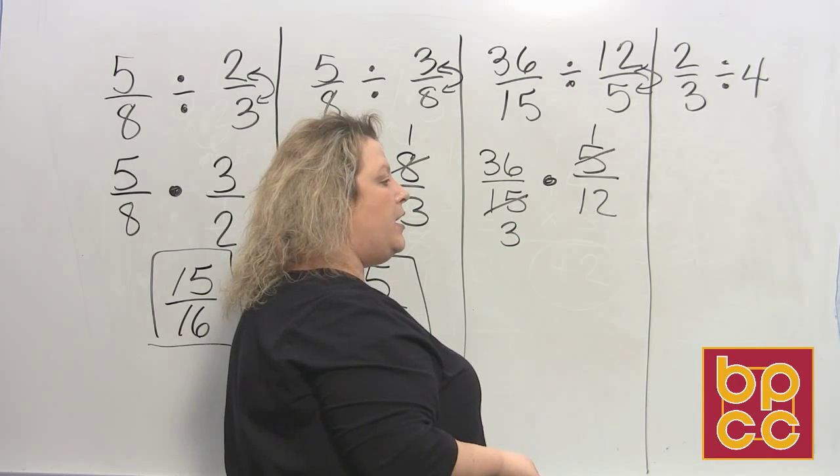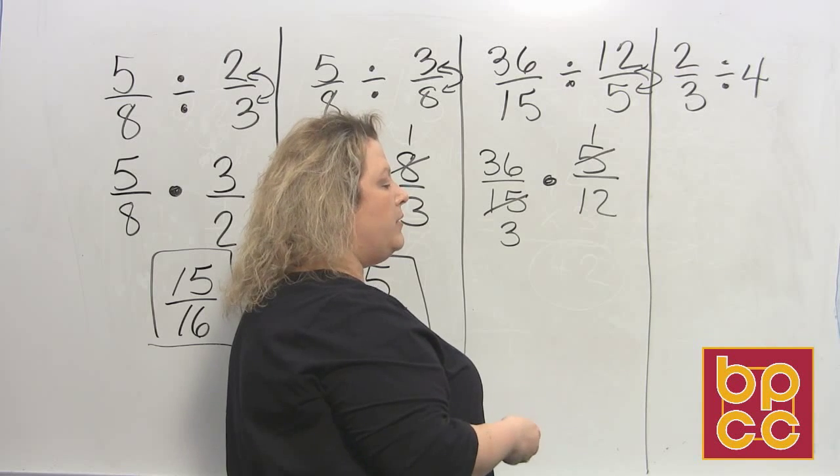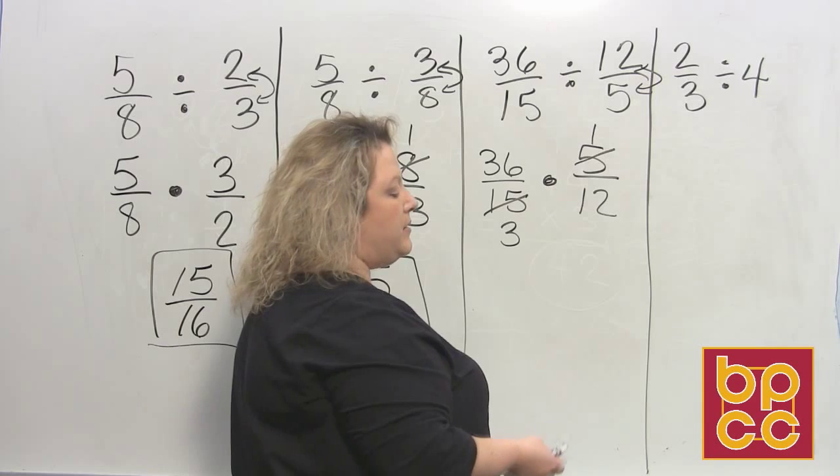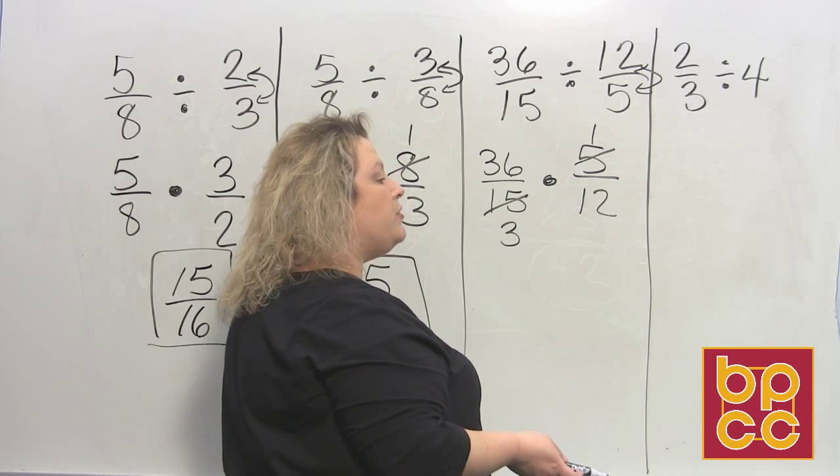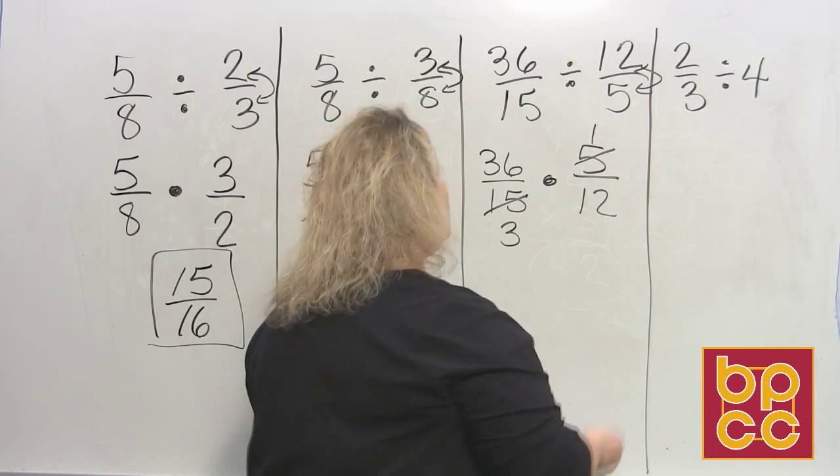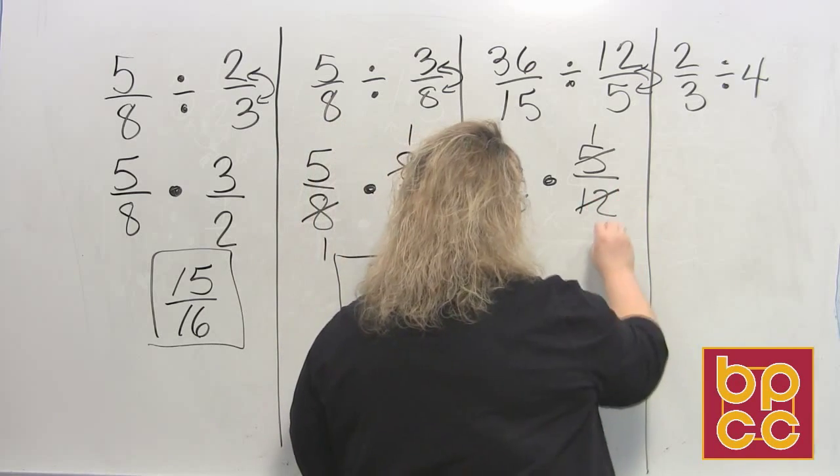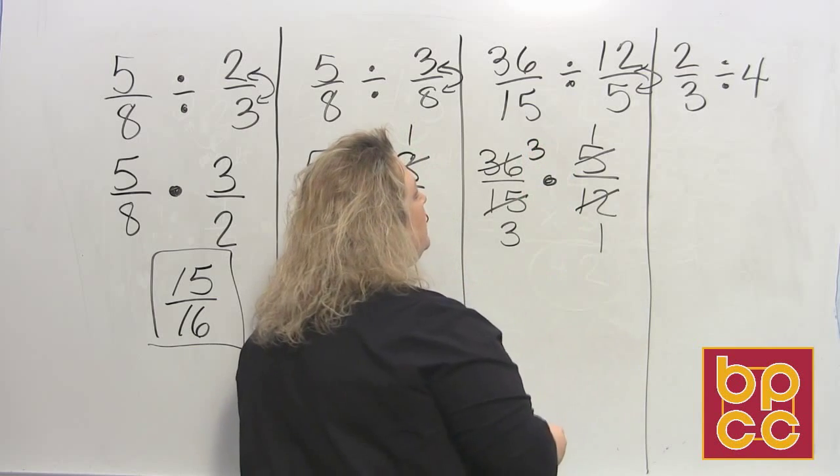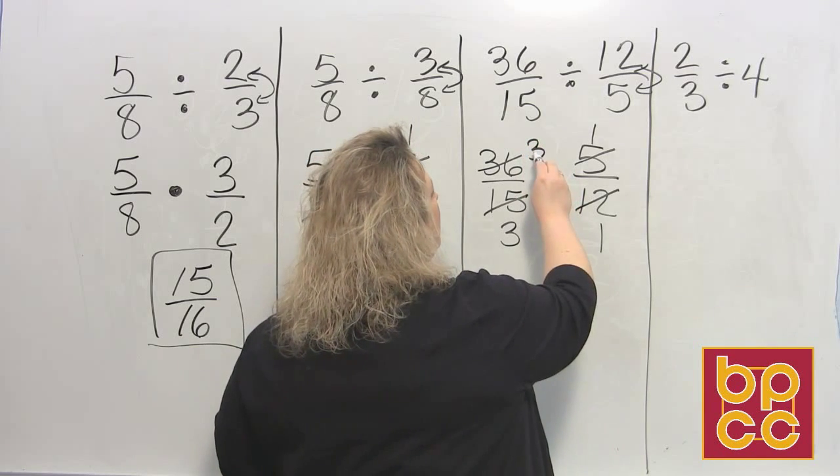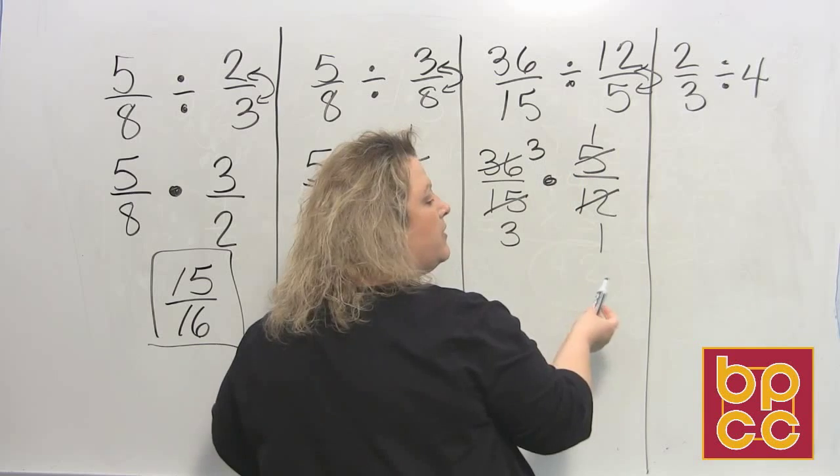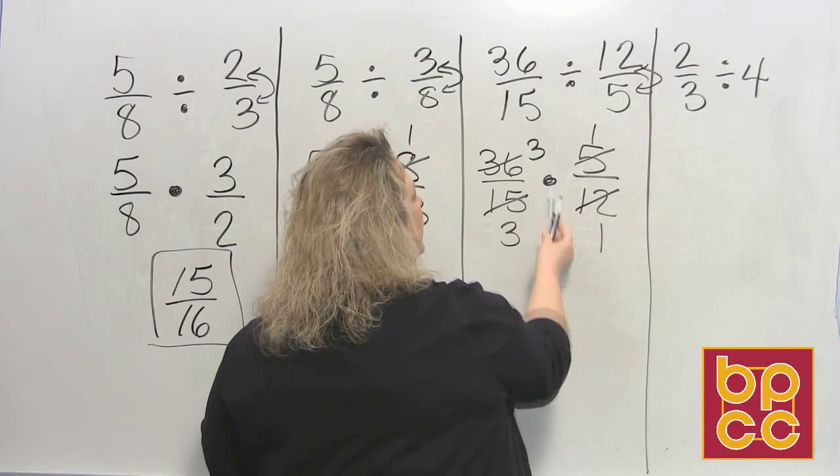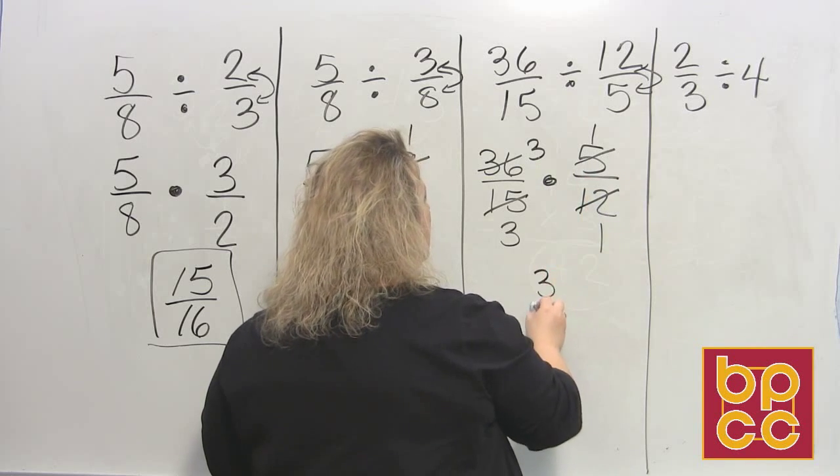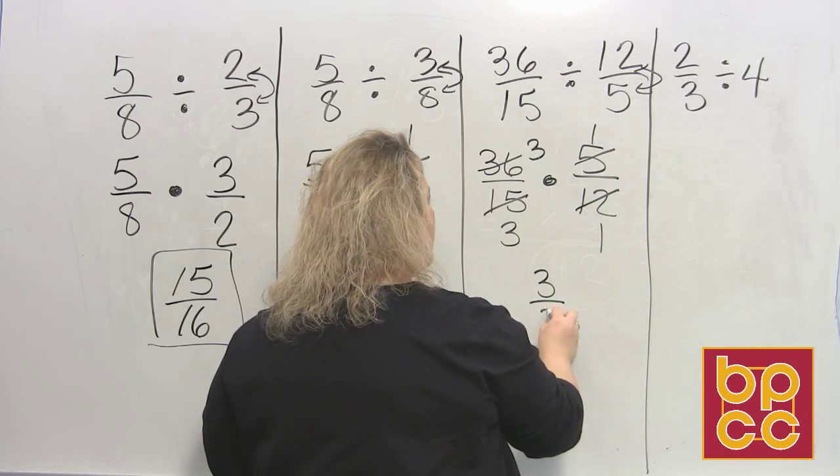And then I'll look at 36 and 12. Now, if you don't automatically know from the multiplying module that 12 times 3 is 36, sometimes you can use your factors to help you get there. But 12 divides into 12 one time. And 12 divides into 36 three times. And then I have a 3. So when I do multiplying fractions, it is no problem. I have top times top, which makes 3. Bottom times bottom, which also makes 3.